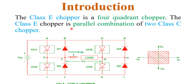The class E chopper is the parallel combination of 2 class C choppers. In the circuit diagram, the supply is a battery with voltage VDC. The circuit uses 4 choppers CH1, CH2, CH3, CH4, and 4 diodes D1, D2, D3, D4. At the load side there is an inductor L and load resistance RL. The reference direction of output current, output voltage positive and negative terminals are also marked.